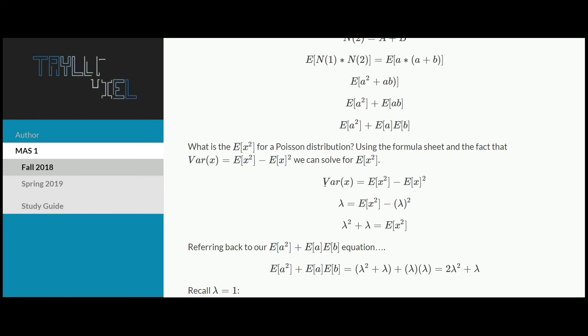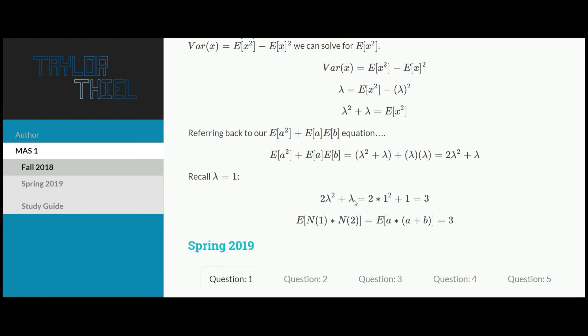You probably have this memorized if you took exam P or if you've been studying for MAS1. We know that both the variance of X as well as the expected value of X equal lambda for a Poisson distribution. We can just plug that in here and say lambda equals the expected value of X squared minus lambda squared. Then we can just solve for the thing we actually care about, which is the expected value of X squared for a Poisson process. That just ends up equaling lambda squared plus lambda.